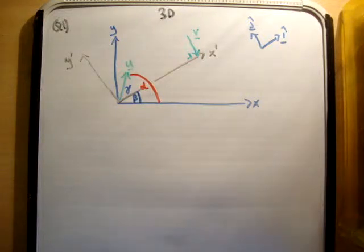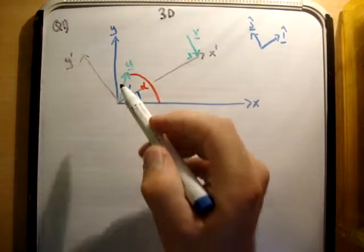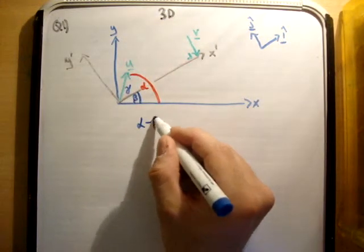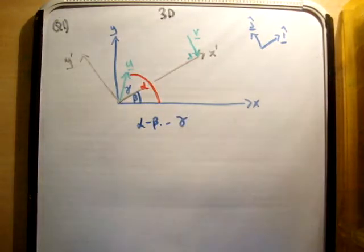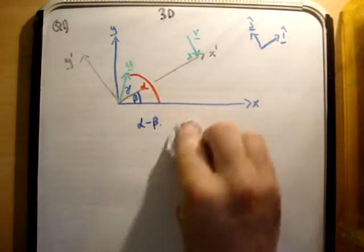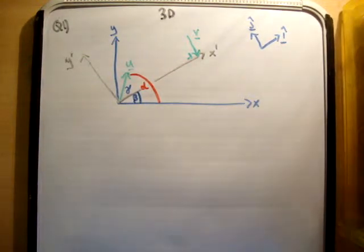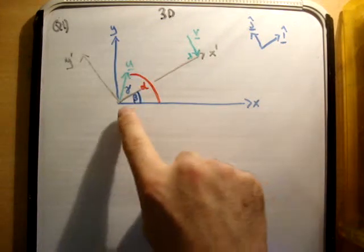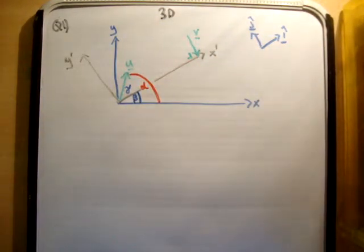So the question says a projectile is fired with initial velocity u cos alpha i hat plus u sine alpha j hat. A plane P passes through the point of projection and makes an angle beta with the horizontal. If the particle strikes the plane P at right angles after a time t, we're given an expression to show.